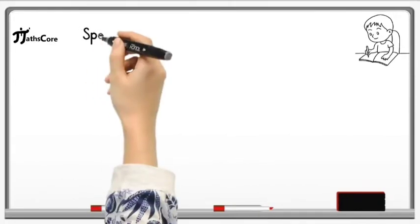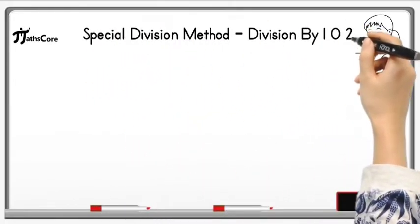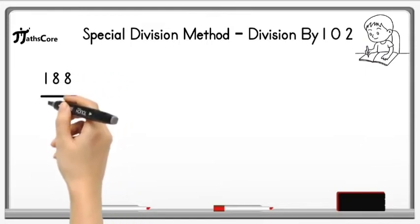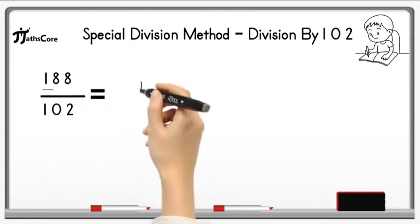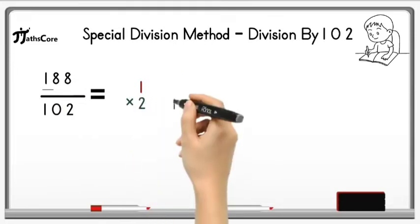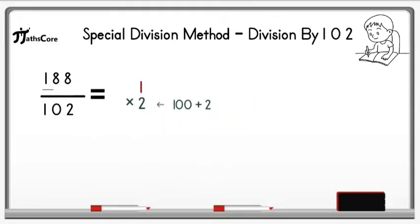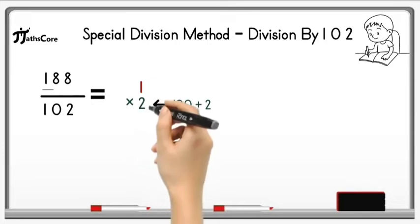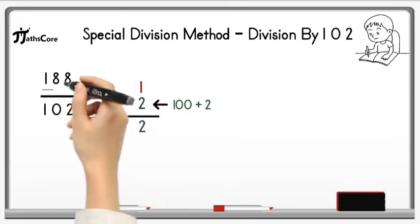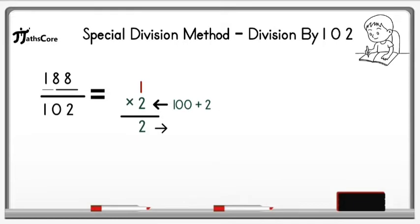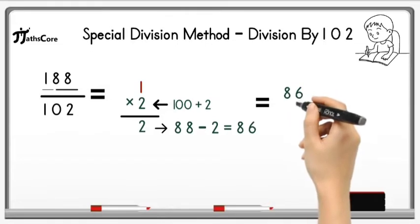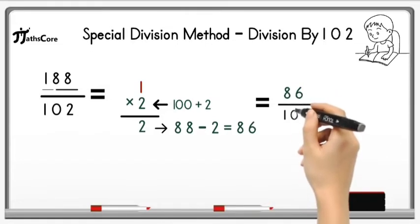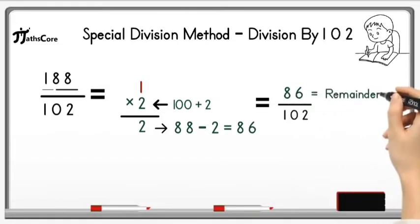Let's solve some examples on division by 102. The first example is 188 divided by 102. Write down 100 plus digit 1 here and multiply it by 2, because if we add 2 to 100 we get 102. So 1 multiplied by 2 is equal to 2. Now subtract this 2 from 88: 88 minus 2 is equal to 86. Divide 86 by 102 — it is not possible because 86 is less than 102. So 86 is the remainder and 1 is the quotient.